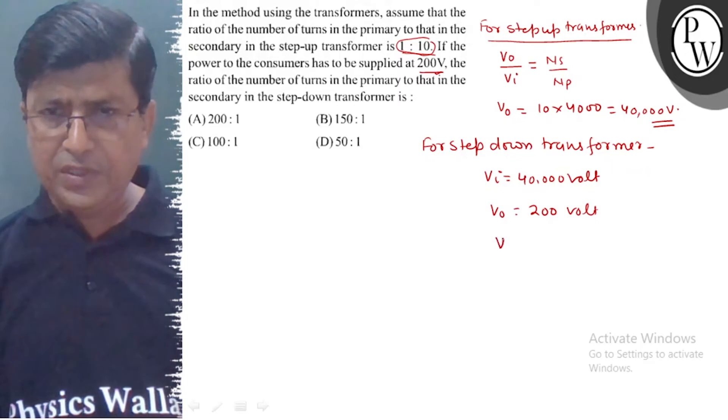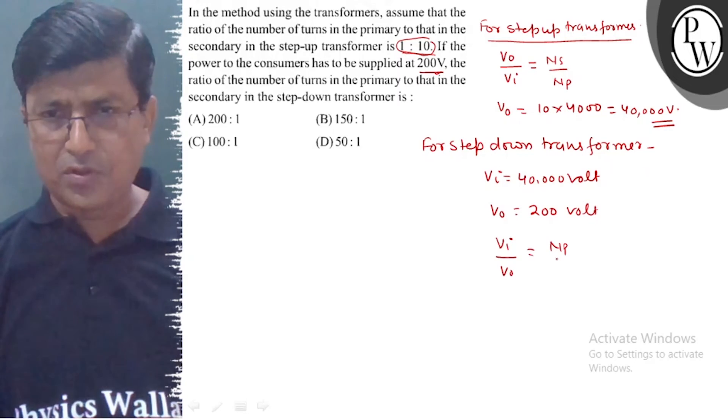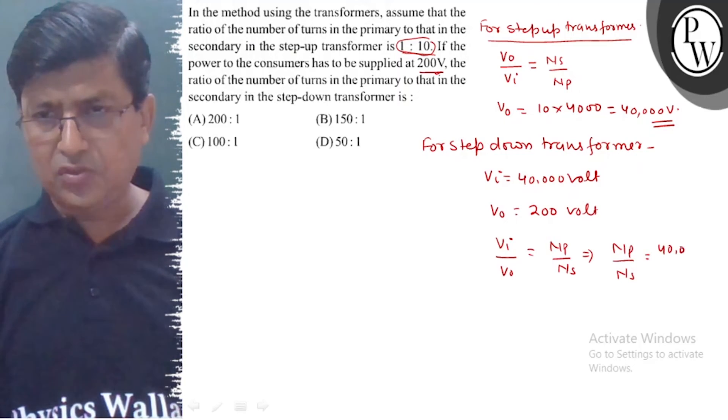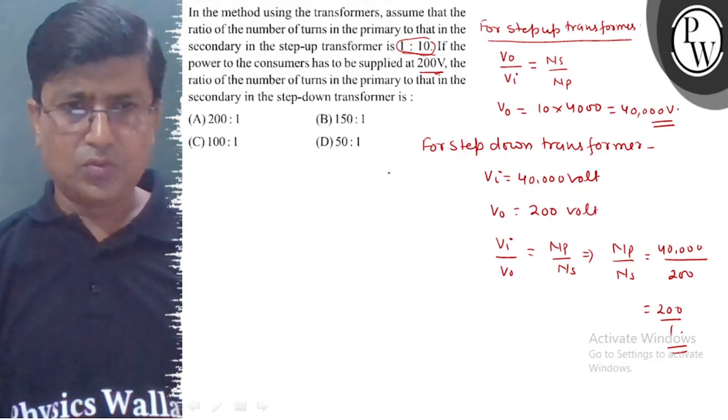V input upon v output equals np upon ns. So here np upon ns value is 40 thousand upon 200, equal to 200 to 1. So this is the correct answer.